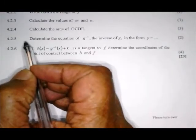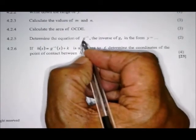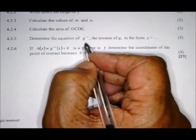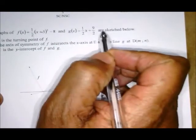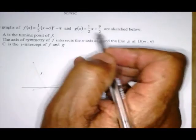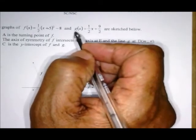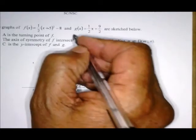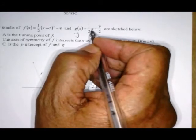4.2.5: Determine the equation of g⁻¹. When you see g to the power -1, it means the inverse of g. Write it in the form y = ... Remember g is the straight line. For inverses, x and y must exchange places. So g(x) is actually y, then y becomes x and x becomes y. Don't forget to make y the subject.